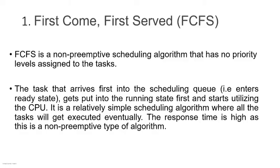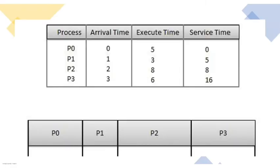In FCFS, the task that arrives first in the scheduling queue is put into the running state and starts utilizing the CPU. It is a relatively simple scheduling algorithm where all tasks will eventually get executed. The response time is high since this is a non-preemptive type. Looking at the example, the arrival order is P0, P1, P2, P3, and based on that arrival order the scheduling is done — P0, P1, P2, P3 in that order. The only criterion used is which task arrived first.